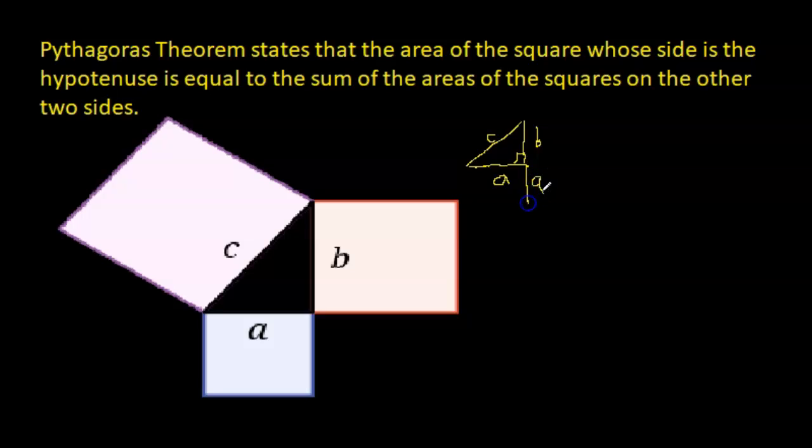Because remember, you know what's special about a square. What's special about a square? All sides are equal and all angles are right angles. In other words, all angles are 90 degrees.